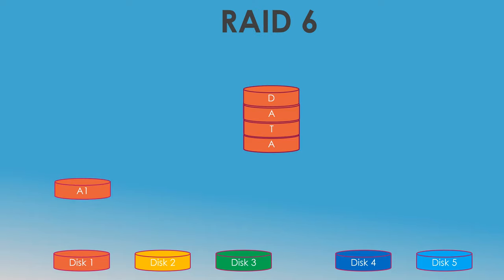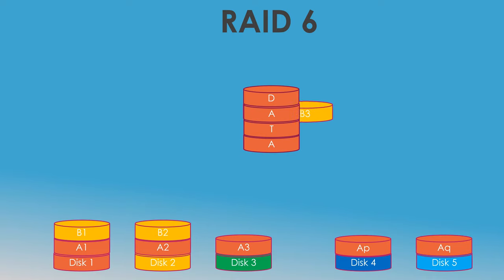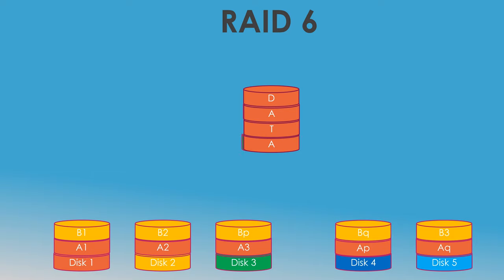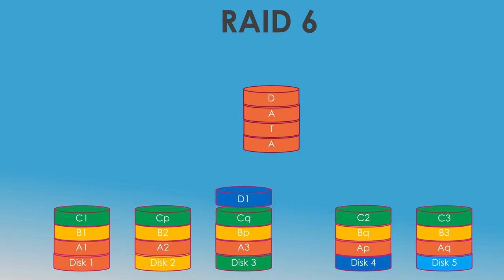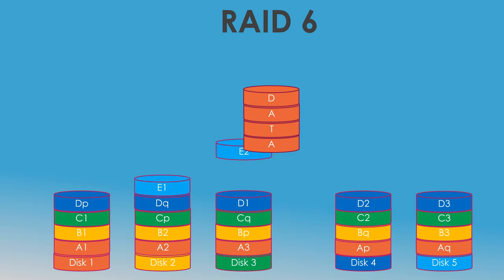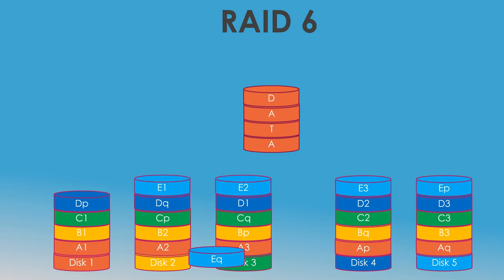Building a RAID 6 array allows you to solve this problem to a great extent. This array type allocates the total volume of two disks for storing checksums, which are spread over different disks in a cyclic and regular way. Instead of one checksum, two checksums are calculated, which ensures data integrity even if two drives within one array fail at the same time. RAID 6 advantages are higher data protection and less performance loss compared to RAID 5, in case of recovering data after a faulted drive is replaced. The disadvantage of RAID 6 is a 10% decrease in overall data transfer rate caused by the growing amount of calculations required to generate the checksums and the increasing volumes of data to be read and written.